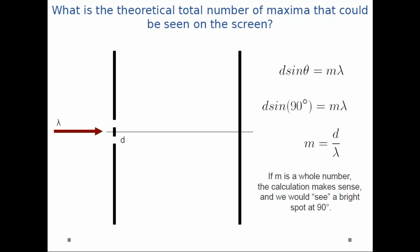Remember, this is a theoretical calculation. So if m is a whole number, we should count m when we're counting up the final number of bright spots.